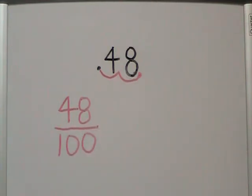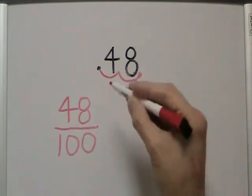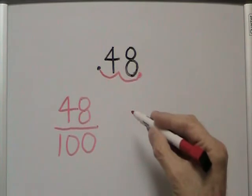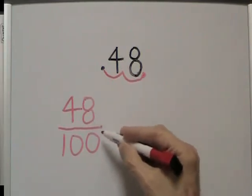48 hundredths would be the fraction version of 0.48. However, we could simplify this fraction because there are numbers or factors that go into both 48 and 100.